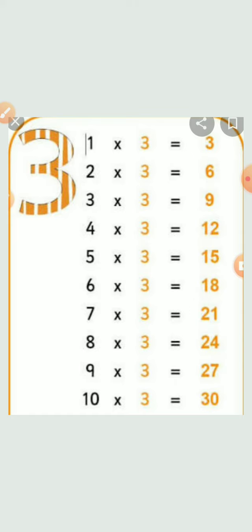Third table: 1 three is 3, 2 threes are 6, 3 threes are 9, 4 threes are 12, 5 threes are 15, 6 threes are 18, 7 threes are 21, 8 threes are 24, 9 threes are 27, 10 threes are 30.